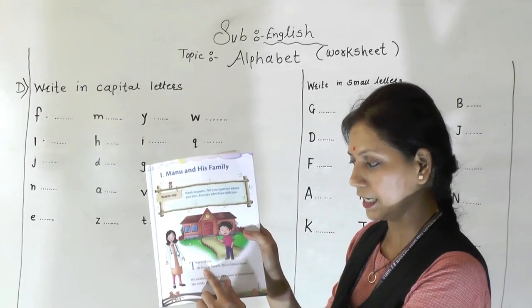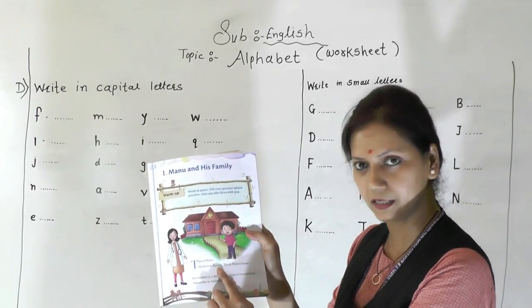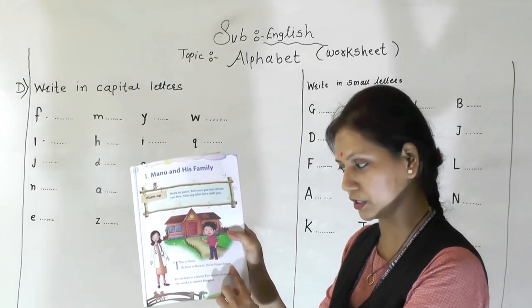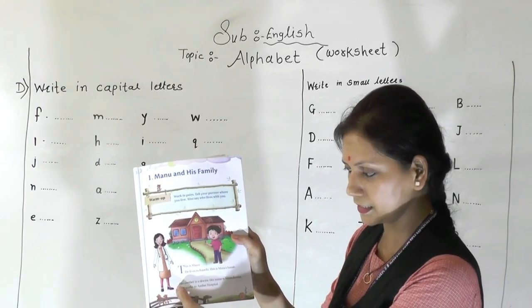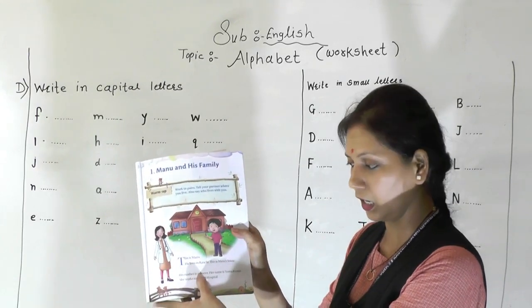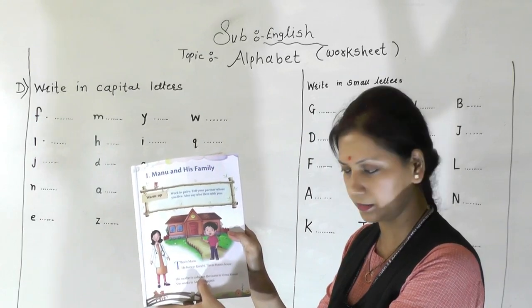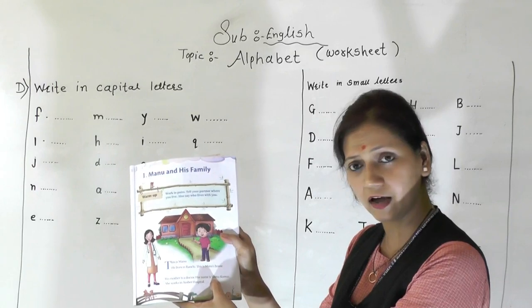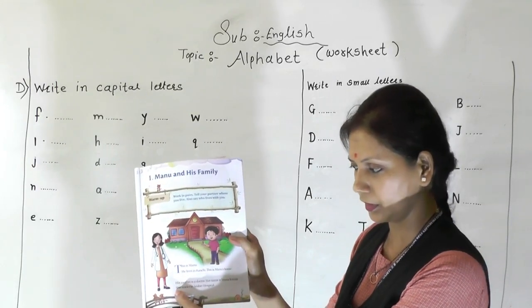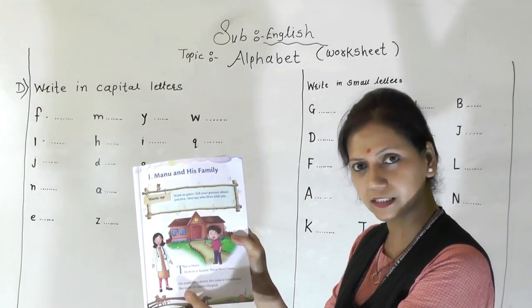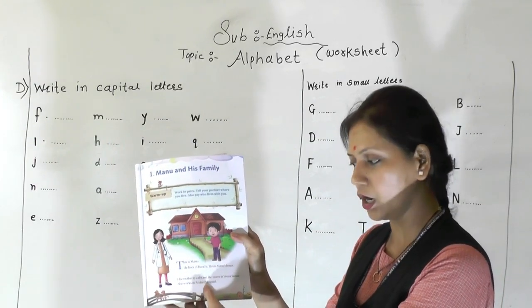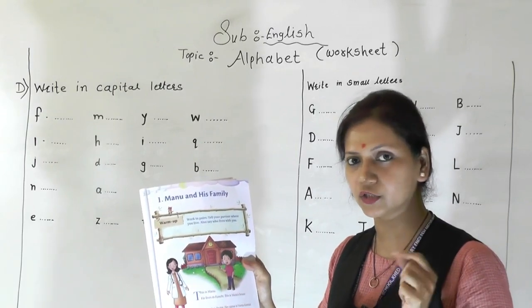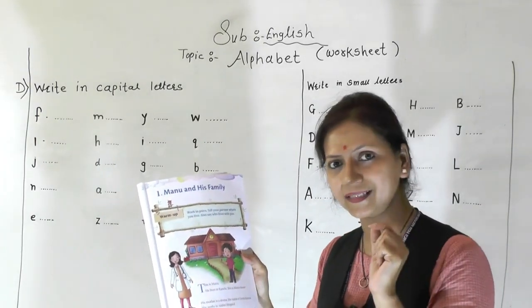This is Manu's house. His mother is a doctor. Her name is Veena Kumar. She works in Umber Hospital. While reading you have to use your pencil so you can put your pencil on each word, okay.